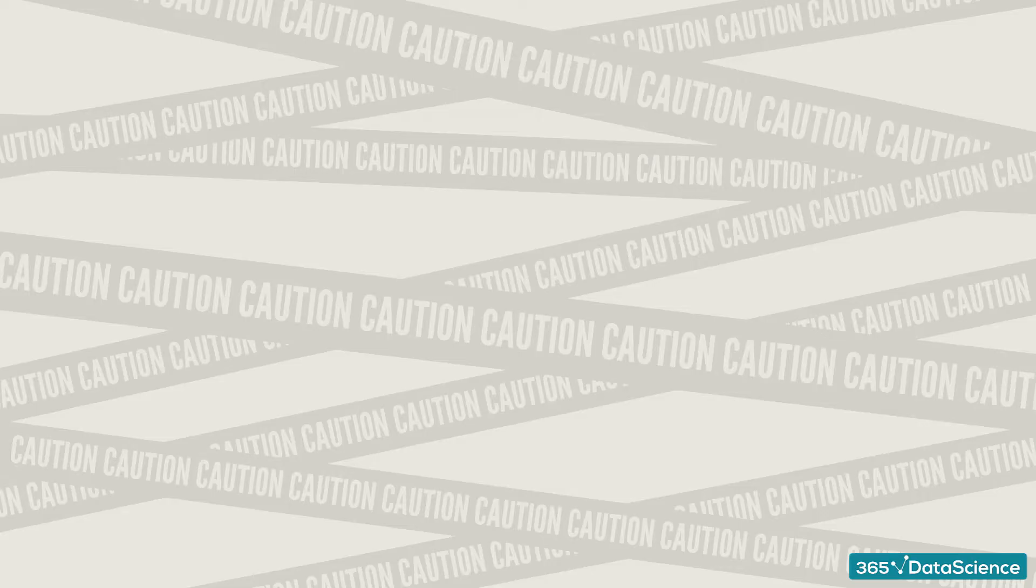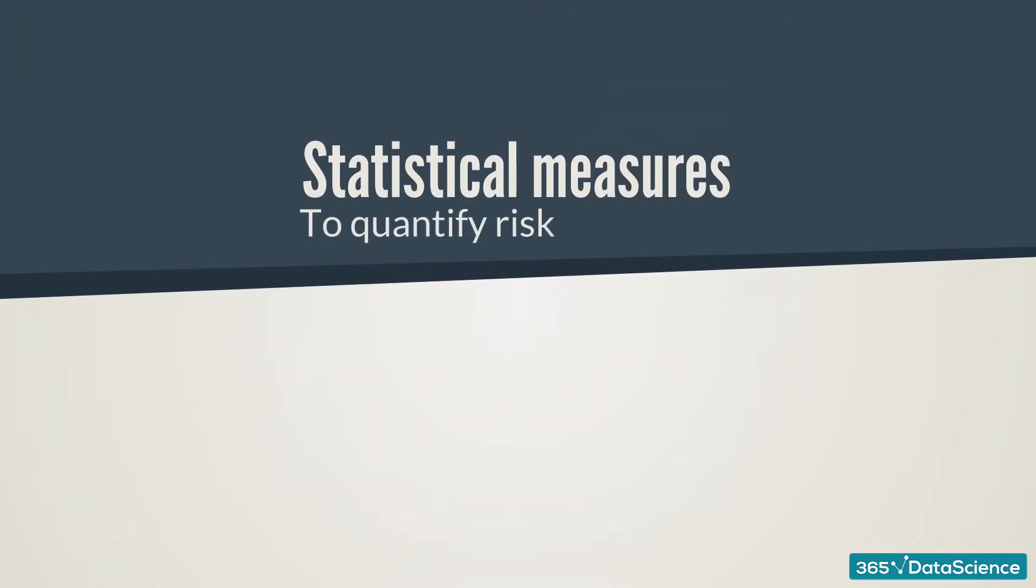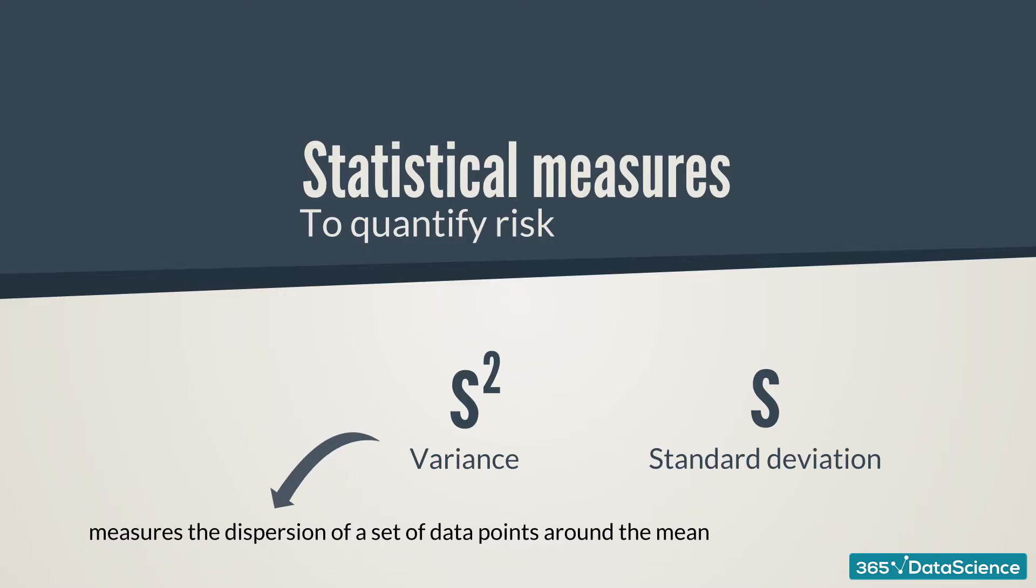Commonly used statistical measures such as variance and standard deviation can help us a great deal when we try to quantify risk associated with the dispersion in the likely outcome. Such dispersion is measured by a security's variance and standard deviation. To be even more precise, the variance of a security measures the dispersion of a set of data points around their mean value.